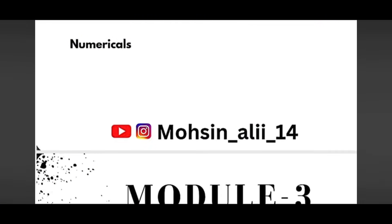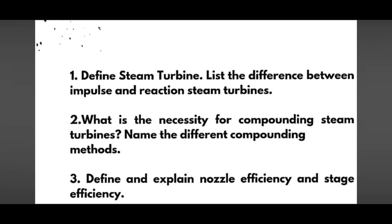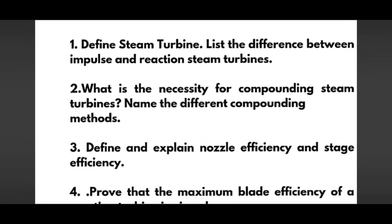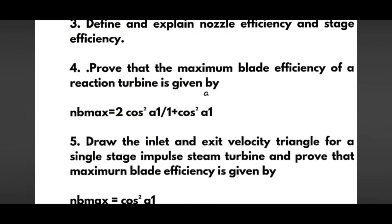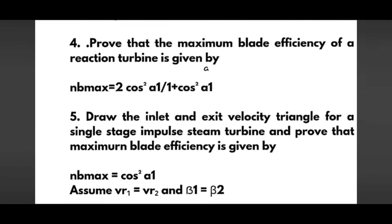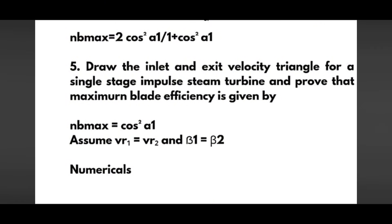Next we have Module 3: define steam turbine and list the differences between impulse and reaction steam turbines. What is the necessity for compounding steam turbines? Name the different compounding methods. Define and explain nozzle efficiency and stage efficiency. Prove that the maximum blade efficiency of a reaction turbine is given by η_b(max) = 2cos²α₁ / (1 + cos²α₁). Draw the inlet and exit velocity triangles for a single stage impulse steam turbine and prove that maximum blade efficiency is given by η_b(max) = cos²α₁, assuming v_r1 = v_r2 and β₁ = β₂.